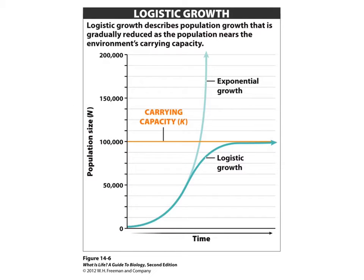As mentioned before, exponential growth cannot continue forever. This leads us to our second model of growth: the logistic growth model. Logistic growth describes population growth that is gradually reduced as the population nears the environment's carrying capacity. The carrying capacity is the number of organisms that the environment can support long term. In the logistic growth model, the carrying capacity — abbreviated as K — is where the population levels off and is no longer increasing.